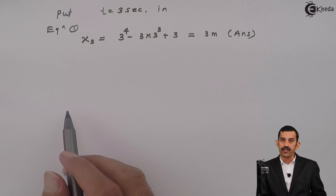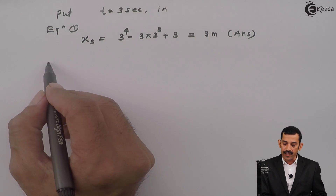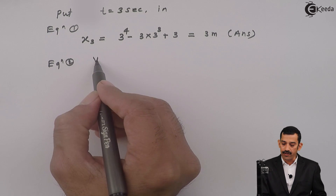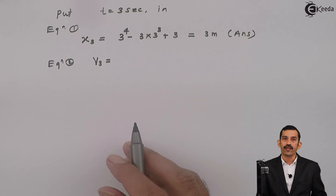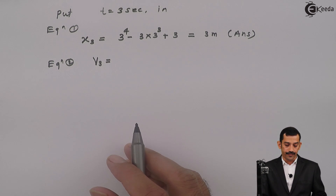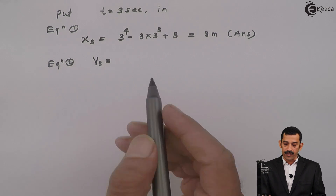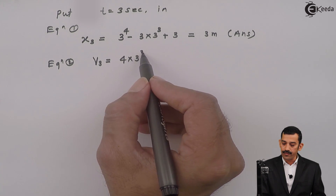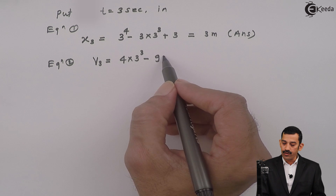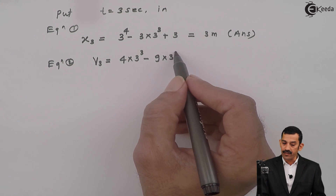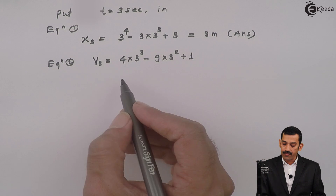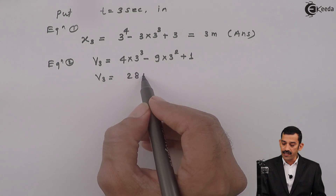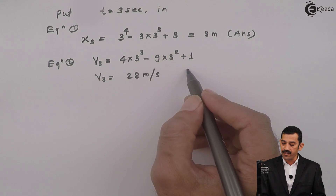Similarly, putting t equal to 3 seconds in equation 2 for velocity: v at 3 seconds equals 4 into 3 cubed minus 9 into 3 squared plus 1. Calculating this, the answer comes out to be 28 meters per second. This is our second answer.